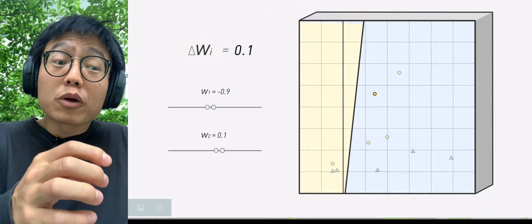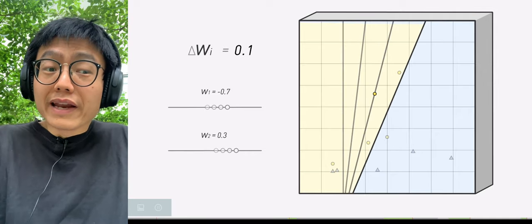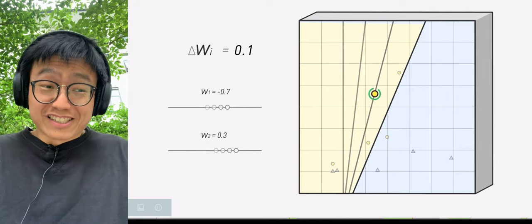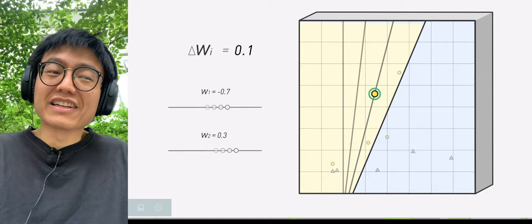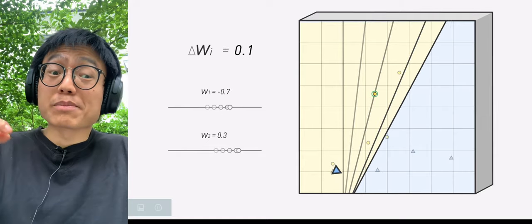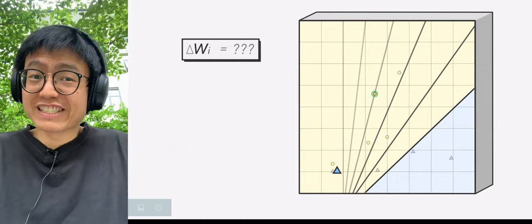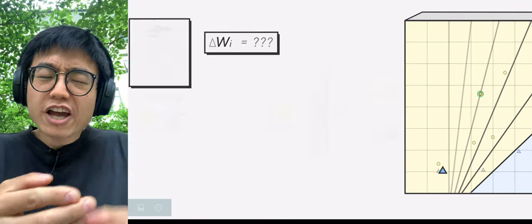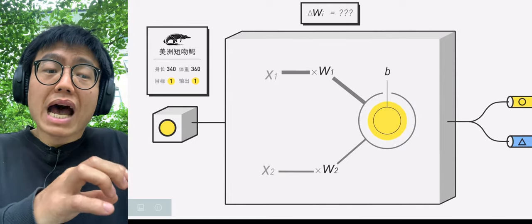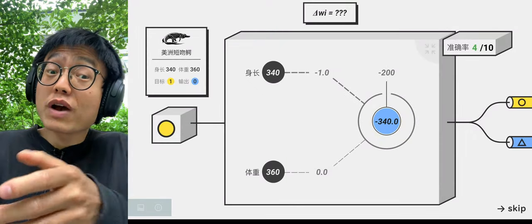Assuming that delta Wi is a fixed value, let's say 0.1, then after three iterations, W1(4) equals negative 0.7, W2(4) equals 0.3. The number one American alligator was successfully classified, but after that, by all possible means, it cannot correctly adjust the parameters of number 2, Eastern Diamondback Rattlesnake. So it is obvious that delta Wi should be an expression made up of multiple parameters, allowing W to keep adjusting in the right direction.